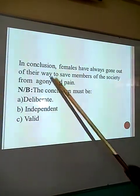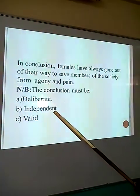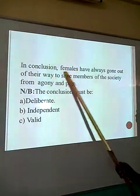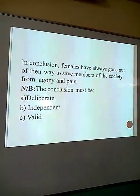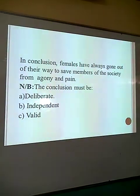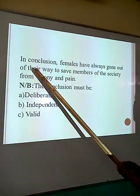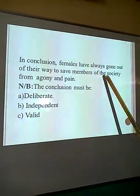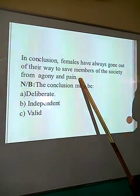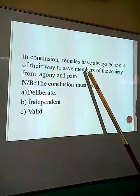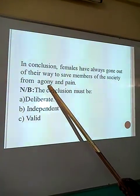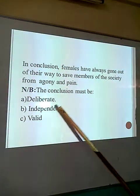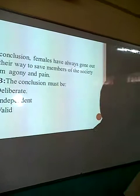In conclusion, we said the other day that any conclusion must be deliberate — it must be independent, on its own paragraph, and it must be valid. Whatever statement comes alongside that conclusive remark must synchronize with what the question is all about. In conclusion: 'Females have always gone out of their way to save members of society from agony and pain.' We can see that Torvald is saved from agony and pain, and Krogstad is also saved. Therefore, this is a valid conclusion.